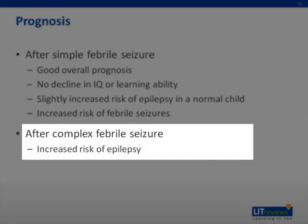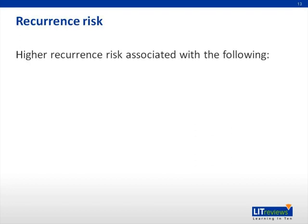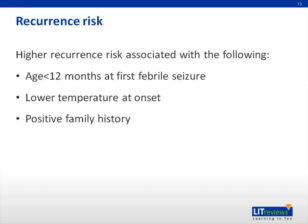After a complex febrile seizure, there is a significantly increased risk of epilepsy. Children with abnormal neurologic development have a particularly increased risk. Higher recurrence risk is associated with several characteristics. Age at onset of the first febrile seizure is prognostic, with recurrence rates of 50–65% in children with a first febrile seizure before the age of 12 months, compared with rates of about 20% in older children. Other factors include lower temperature at the onset of the seizure, family history positive for febrile seizures, and complex features.